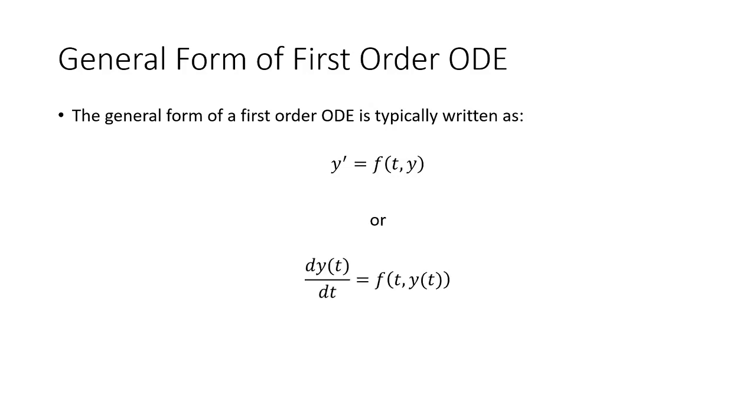So the backward Euler method is another method for approximating the solution of a first-order ordinary differential equation. And just to remind you what that equation looks like, we have y' equals some function of t and y, like we talked about last time. So this could look like y' equals 4 times y, 4 times y plus t. It could be a number of different things. But generally it's just the derivative of y with respect to t is equal to some function of y and t.